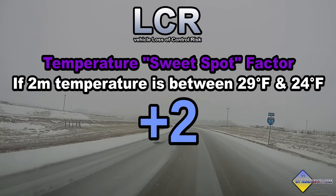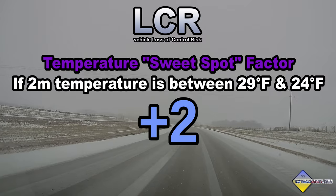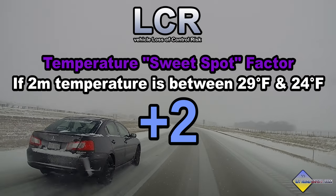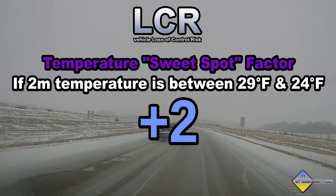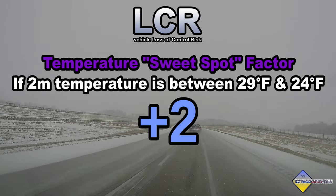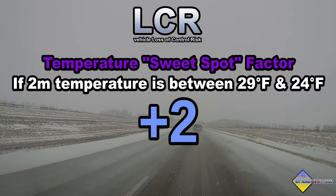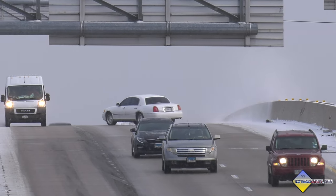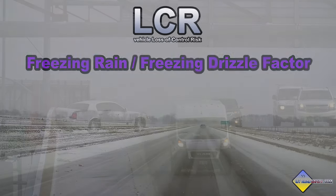Once you get to 29°F, it starts getting really bad. The LCR script adds another two points to the LCR value when temperatures are between 24 and 29 degrees Fahrenheit. This isn't to say roads aren't slippery below 24°F — they are — but the effect of this temperature range is really, really prominent. In fact, the vast majority of incidents I've captured on camera happen within this temperature range.